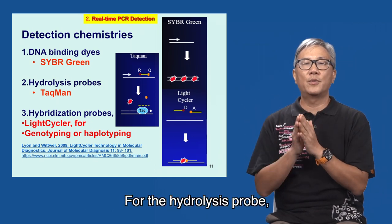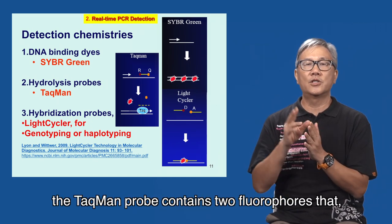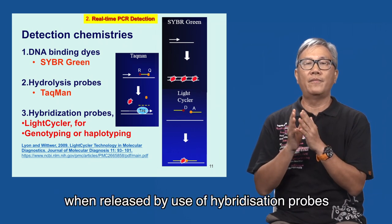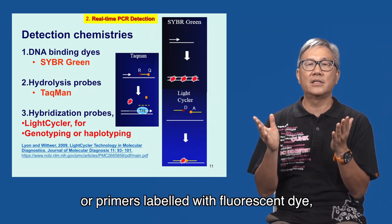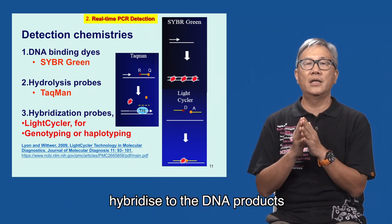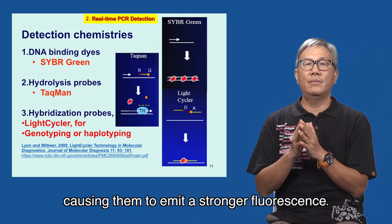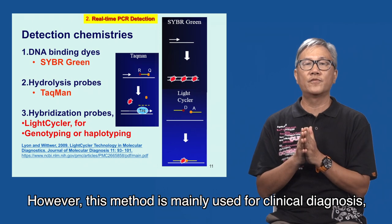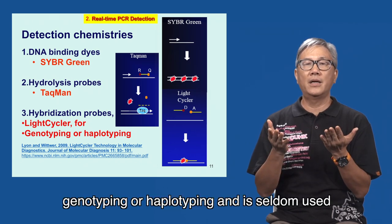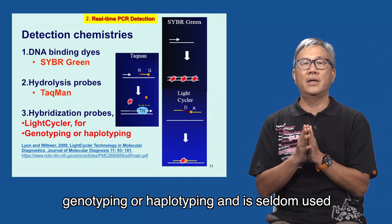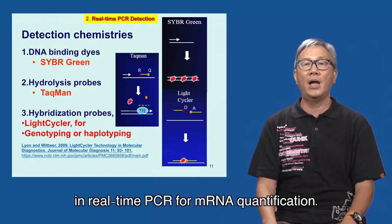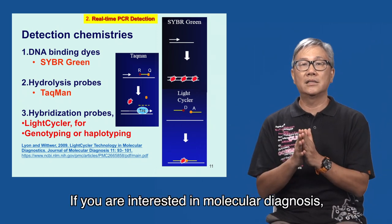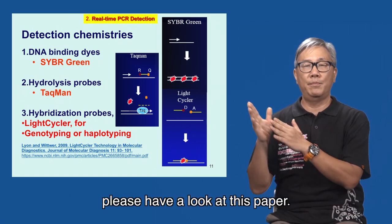For the hydrolysis probe, the Taqman probe contains two fluorophores. When released by use of hybridization probes or primers labeled with fluorescent dye, they hybridize to the DNA products causing them to emit stronger fluorescence. However, this method is mainly used for clinical diagnosis, genotyping or haplotyping, and is seldom used in real-time PCR for mRNA quantification. If you are interested in molecular diagnosis, please have a look at this paper.